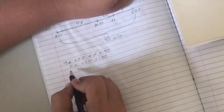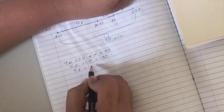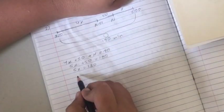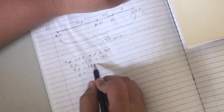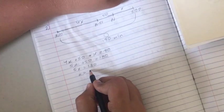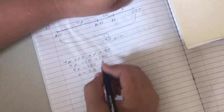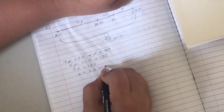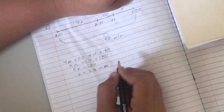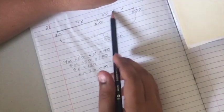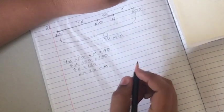Take 50 to the other side and we get 130. We divide 130 by 5, we get 26 minutes.